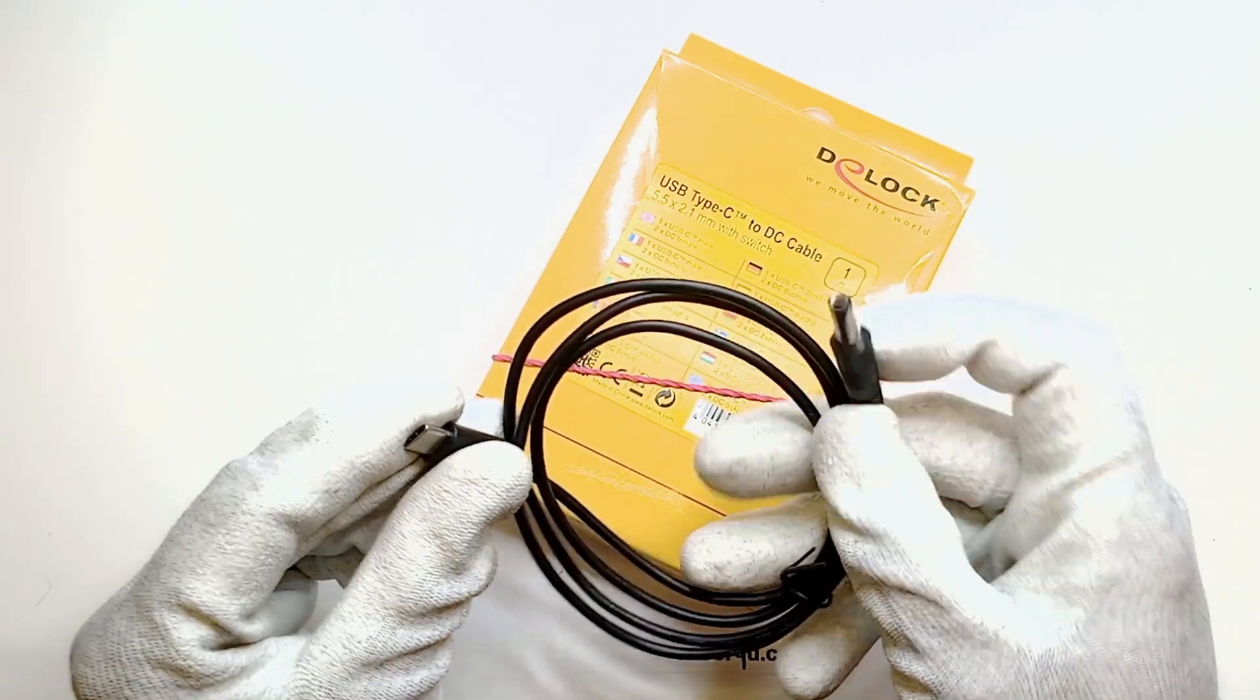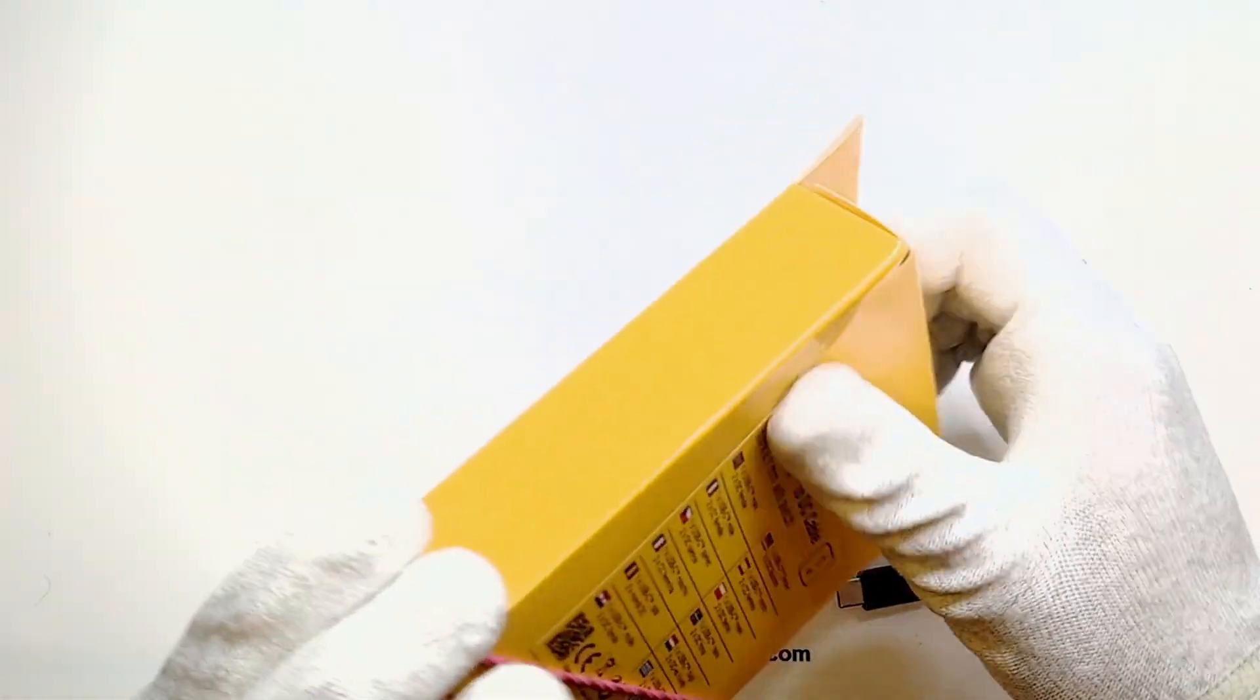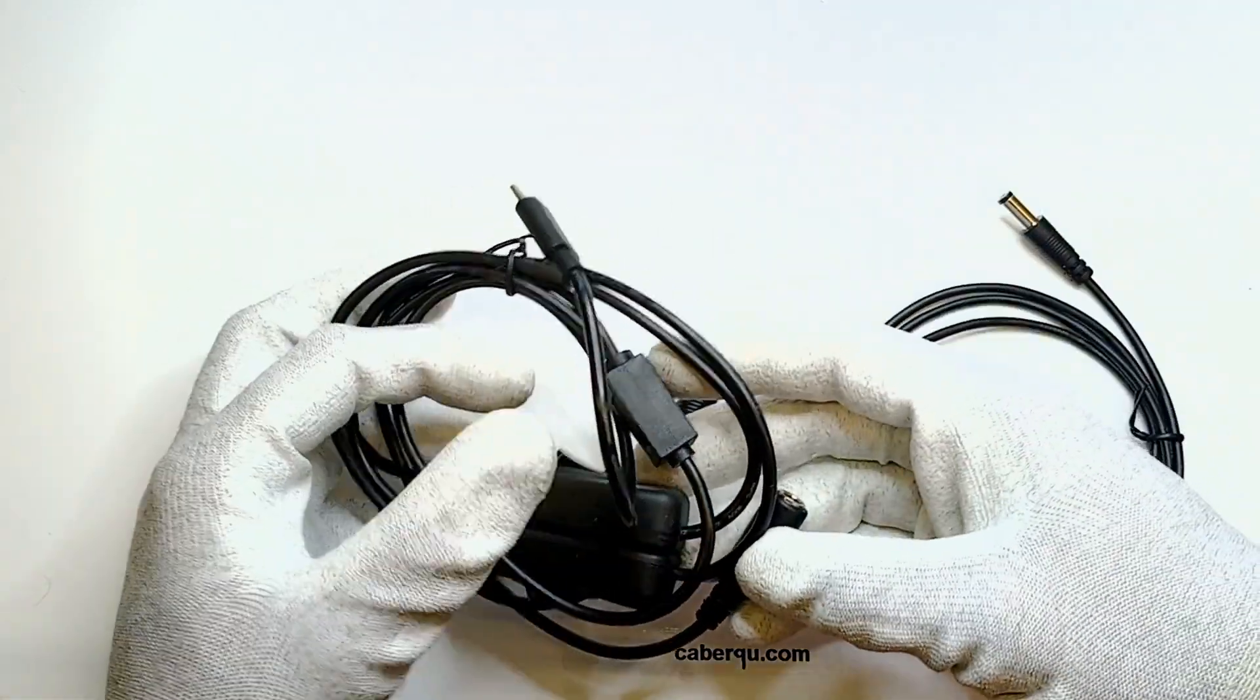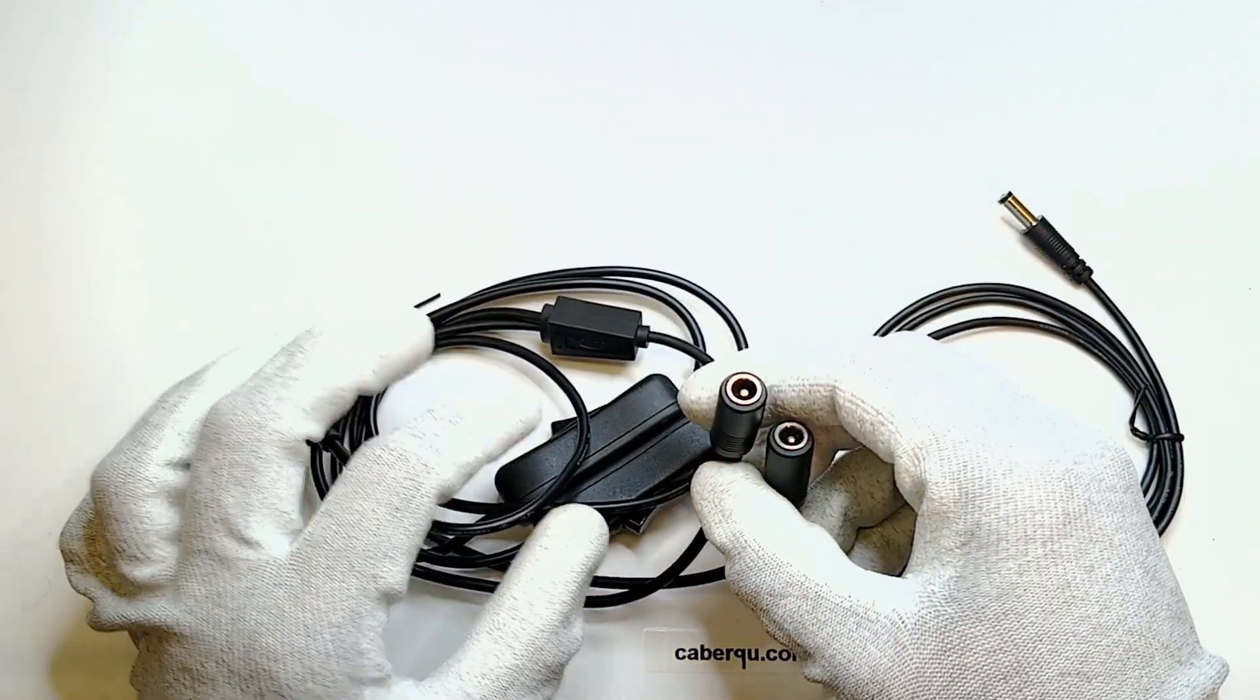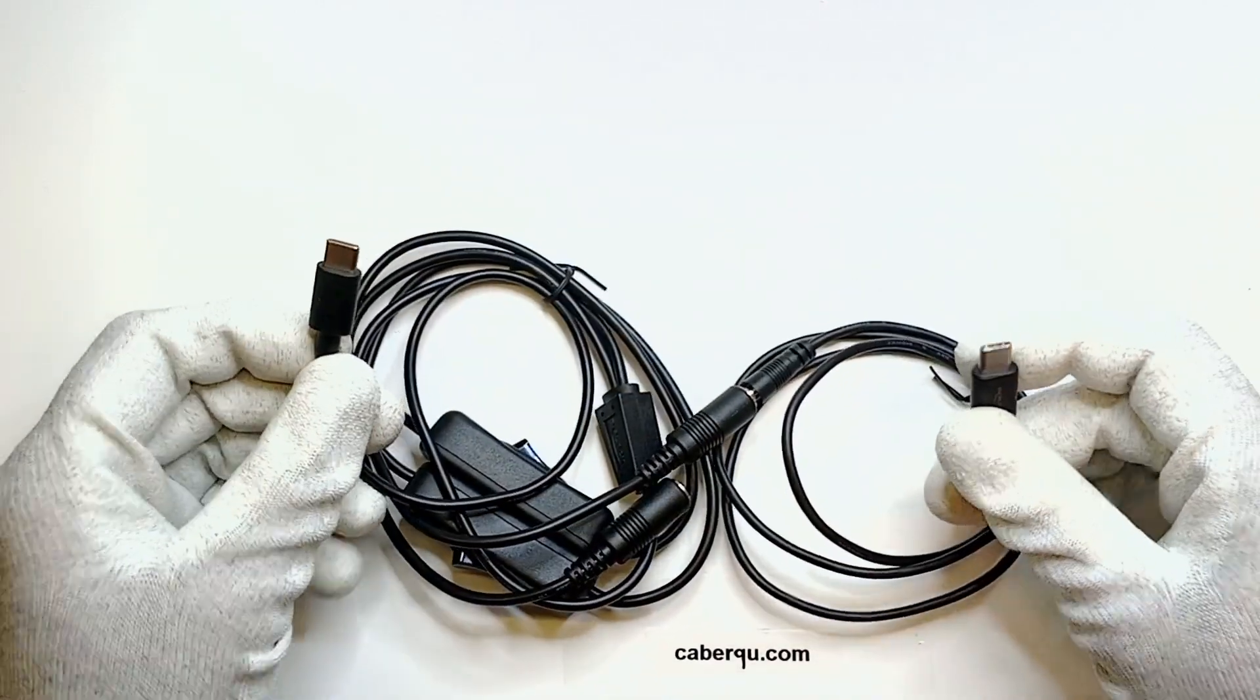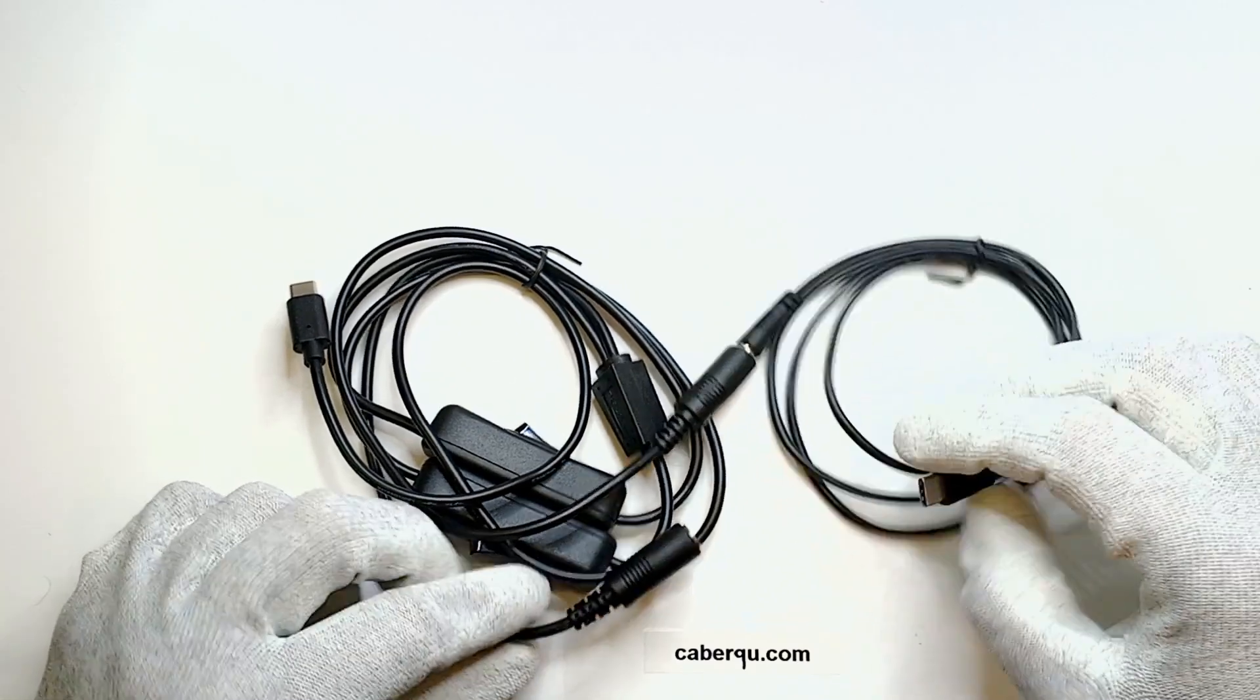So it has this USB-C connector on one end and this 5.5 by 2.1 millimeter barrel jack on the other. The second cable has USB-C on one end and two barrel sockets on the other end. Theoretically we should be able to connect them together like this and form a really long USB-C cable with a switch in the middle and even have a second output for a second USB-C cable.